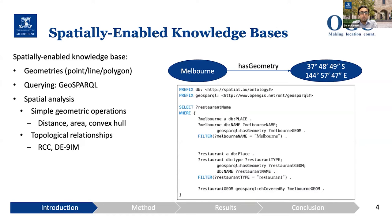To do so, we need to have a spatially enabled knowledge base — a knowledge graph that not only has attribute information about places, but also geometrical information in terms of points, lines, and polygons. To query such a knowledge base, there is a standard query language called GeoSPARQL, and you see an example here.